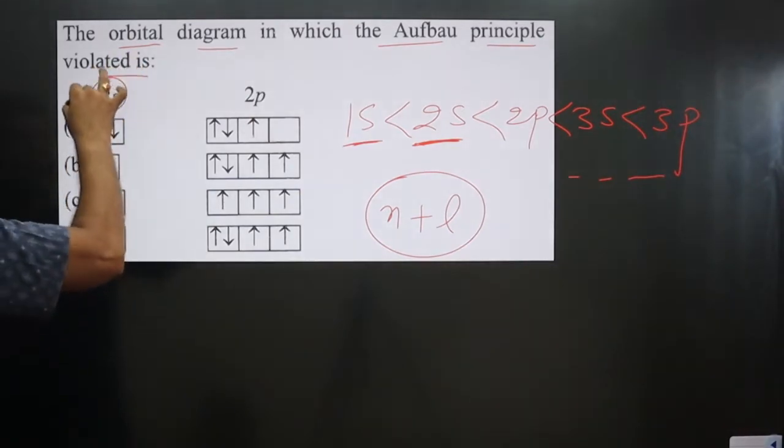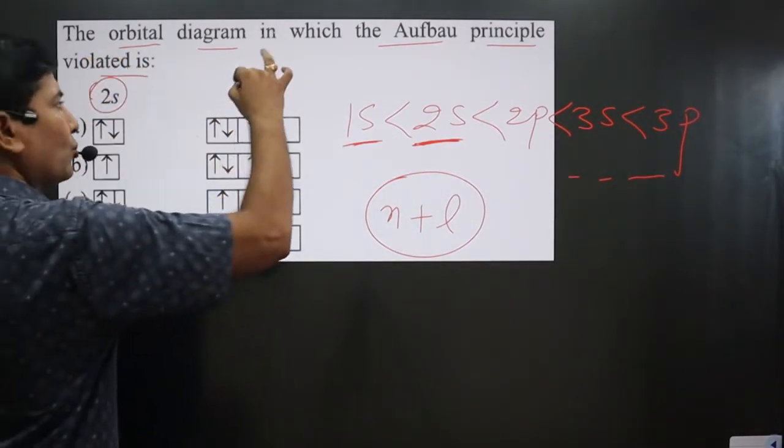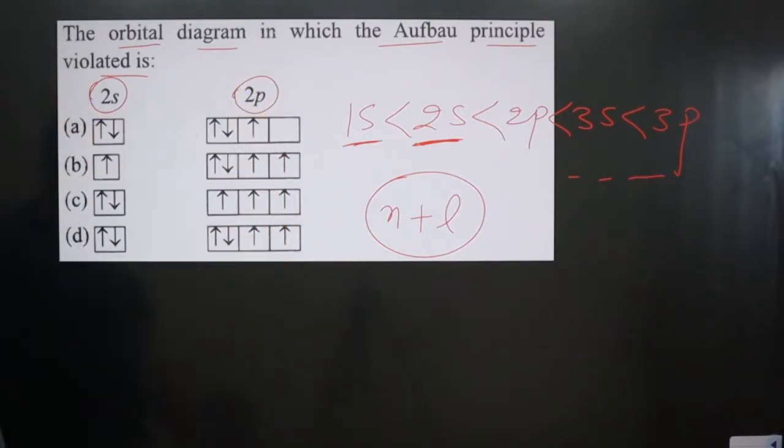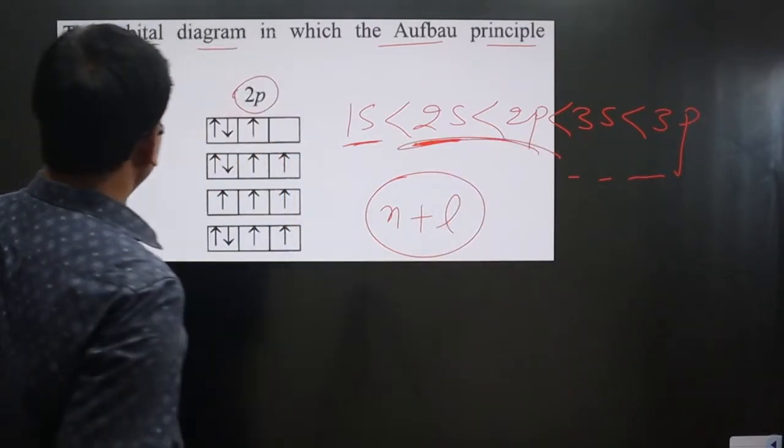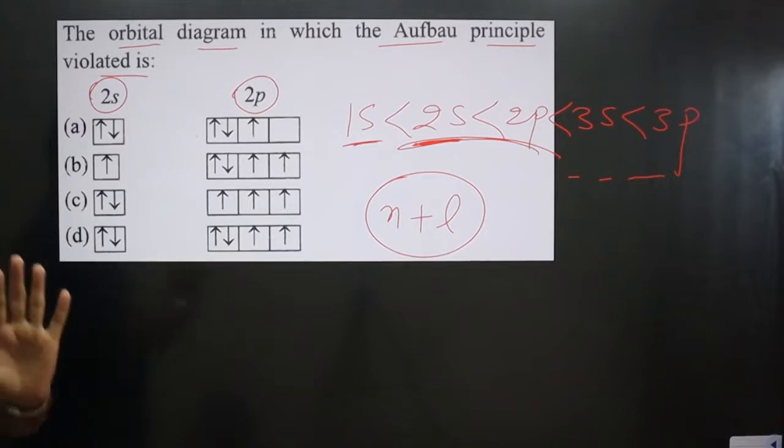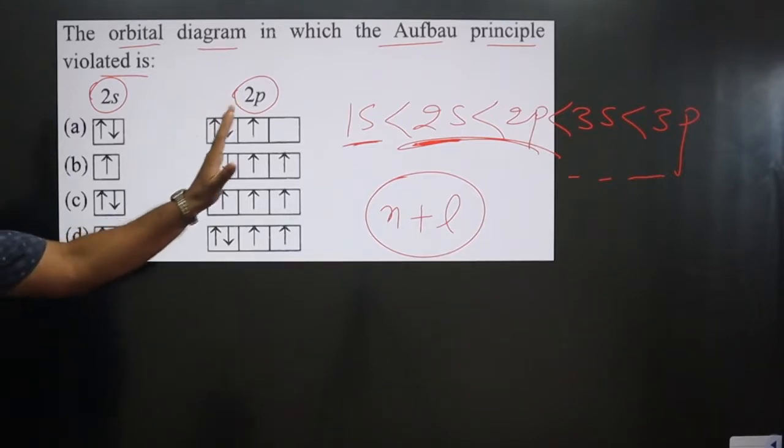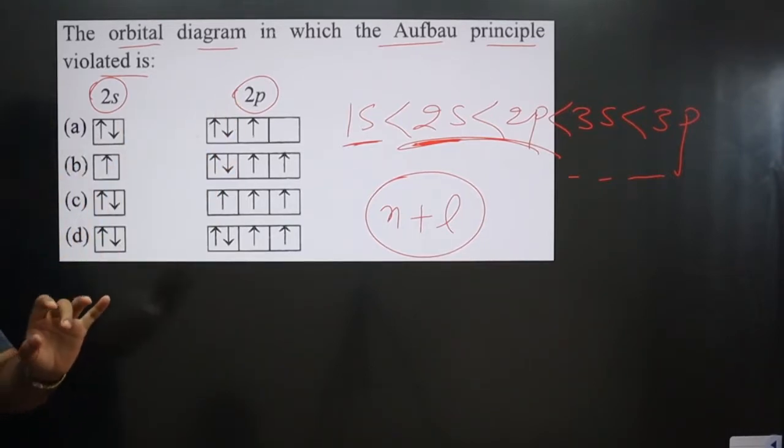Now you can see 2s having lower energy, 2p is having higher energy. You can see this order. So 2s orbital must be filled completely before filling 2p orbitals.